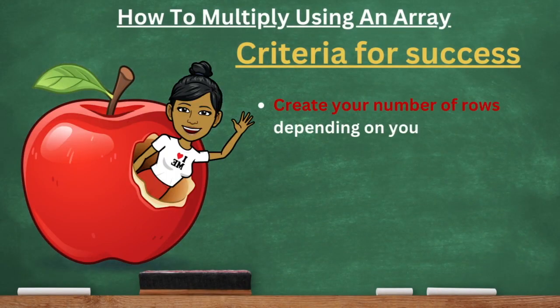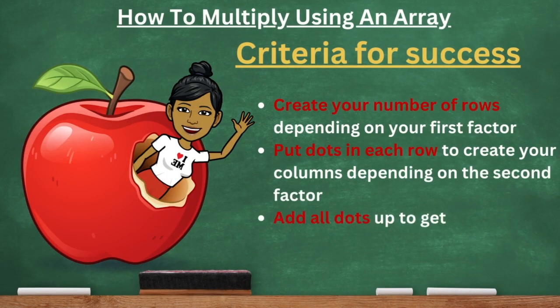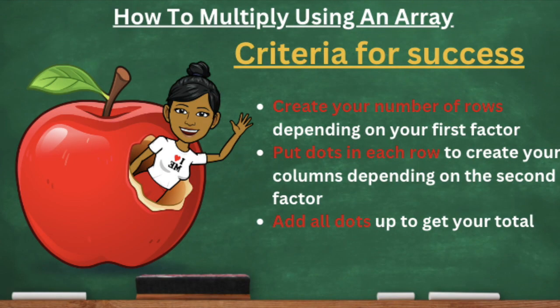In today's class, you guys are going to learn how to multiply using an array. Here is our criteria for success: create your number of rows depending on your first factor, then put dots in each row to create your columns depending on the second factor, and then add up all of the dots to get your total. Let's jump into the first equation.